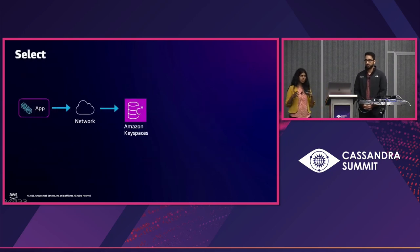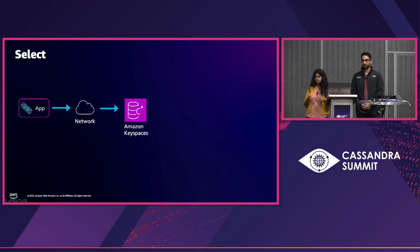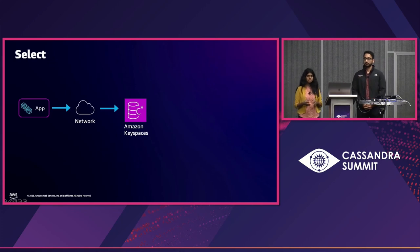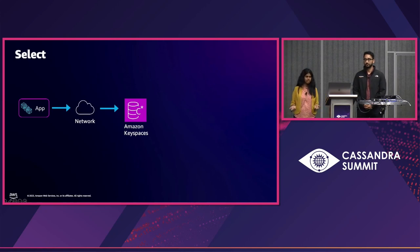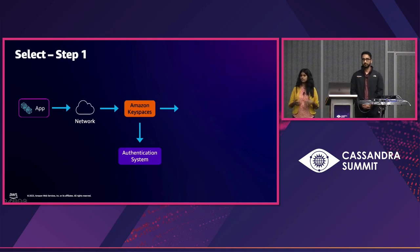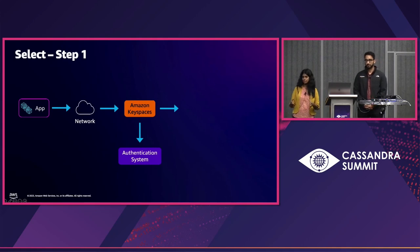Looking at the architecture, let's walk through a select query. The client application talks to Keyspaces. Amazon Keyspaces uses Apache Cassandra's modular architecture, but it's reimagined to provide a fully managed service. Behind the scenes, when you provide the Keyspaces endpoint, we resolve the DNS, which gives you an endpoint that connects to one of the Keyspaces nodes.